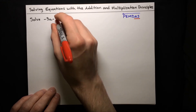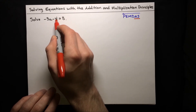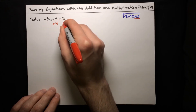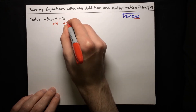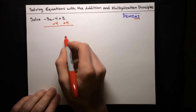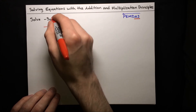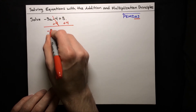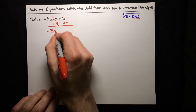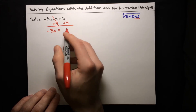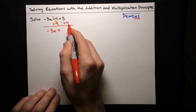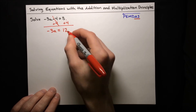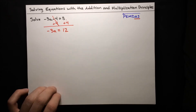We can cancel out that minus 4 with plus 4 — so let's add 4 to both sides. If we do that, this minus 4 cancels with the plus 4, and we just have negative 3a on the left-hand side. On the right-hand side, 8 plus 4 is just 12. So we've got negative 3a equals 12.